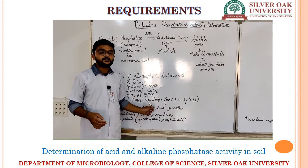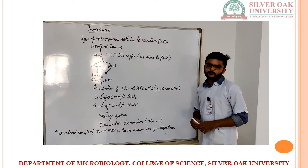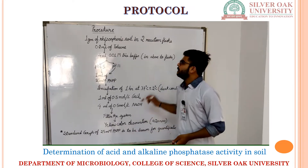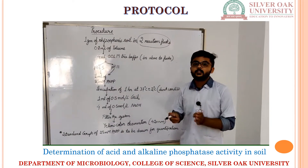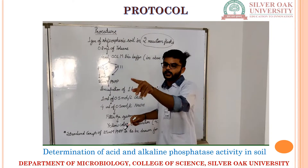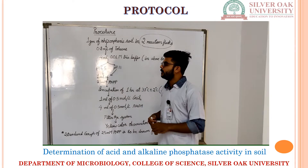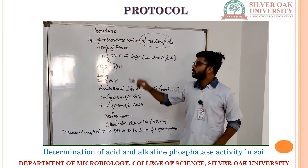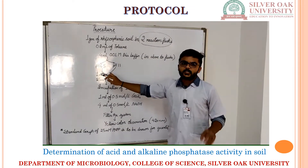For that, we use 0.01 mol MES buffer. For the procedure, we will be taking two reaction flasks — this whole process will be carried out individually in two flasks. First of all, we take one gram of rhizospheric soil in each of the flasks. Then we will add 0.2 ml of toluene. After that, we will add 4 ml of 0.01 molar trace buffer of respective pH in both of the flasks.